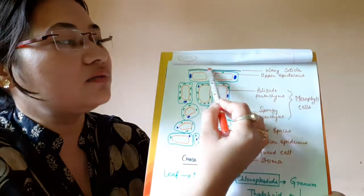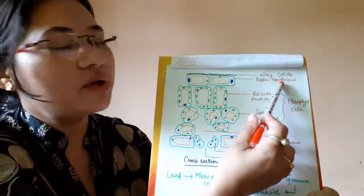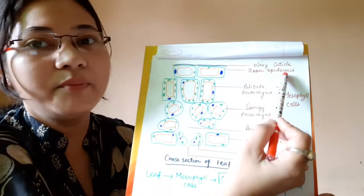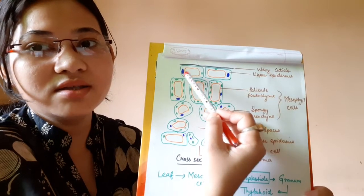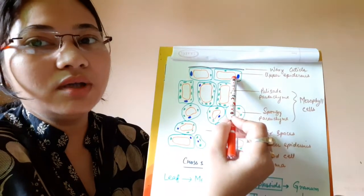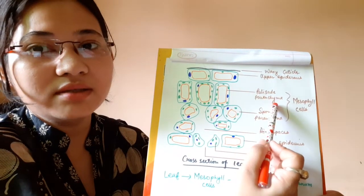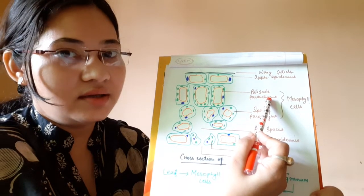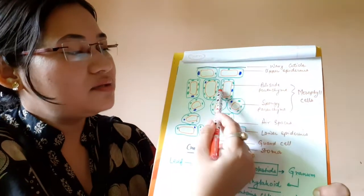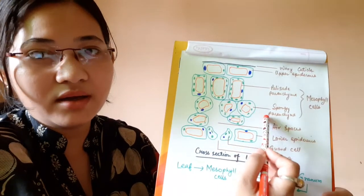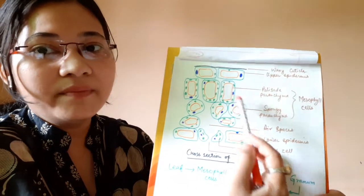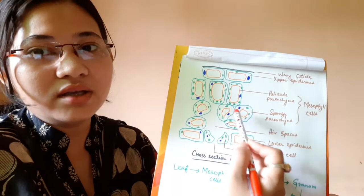There is a waxy cuticle — a waxy coating present just above the upper epidermis, which is the dorsal side of the leaf. The upper epidermis cells have a large vacuole and each cell has a nucleus. Just below the upper epidermis, you can see some elongated cells called palisade parenchyma cells. Just below the palisade parenchyma, we can see the spongy parenchyma. These two constitute the mesophyll cells. So mesophyll cells are of two types: elongated palisade parenchyma cells and irregular spongy parenchyma cells.